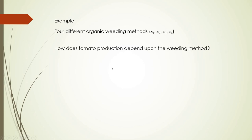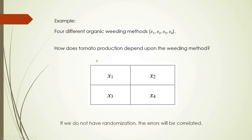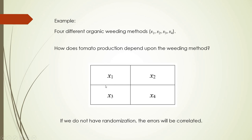For example, we have four different organic weeding methods, from X1 to X4. We want to answer the question: how does tomato production depend upon the weeding method? We run an experiment with four plots of land. If we always experiment with the X1 weeding method on the same plot and X2 on the same plot again, we will not have identically independently distributed data. We need to shuffle — in one run, X1 will be in one plot, and in the second run, X1 will be in some other plot, X4 in some other plot, and so on. Running the experiment 20 times, we need to change the position of these weeding methods across different plots of land.